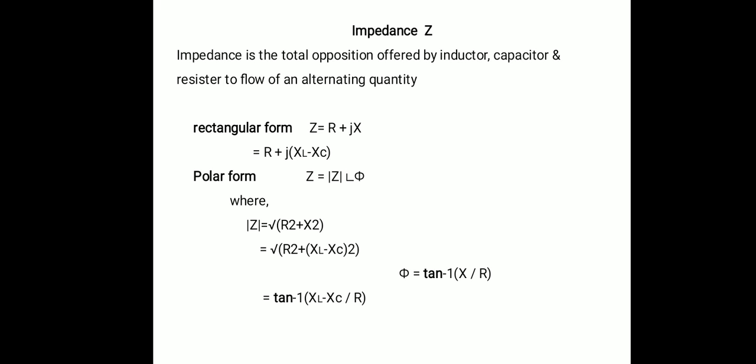We can represent impedance in two ways: one is the rectangular form and another is the polar form. In rectangular form, the value of impedance Z is equal to R plus j times the quantity XL minus XC, where R is the resistive part of the circuit and X is the reactance part of the circuit, with XL as the inductive reactance and XC as the capacitive reactance.